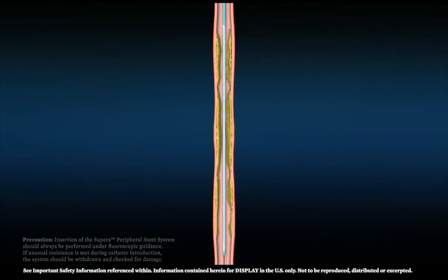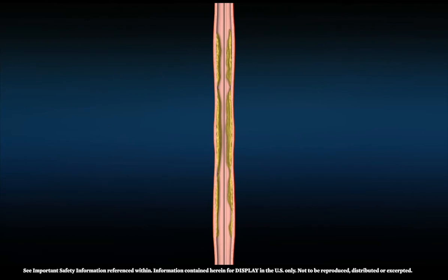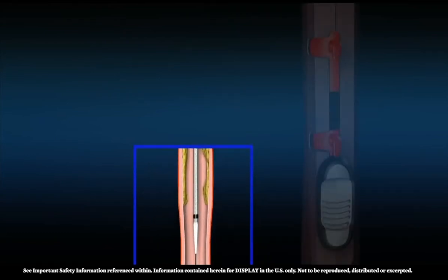Prior to use, Supera should be removed from its packaging, inspected for bends or kinks, flushed and wiped per the instructions for use. The Supera catheter should be introduced into the sheath utilizing a 0.014 inch or 0.018 inch guide wire. Advance the system until the distal sheath marker and the stent length marker encompass the target lesion.